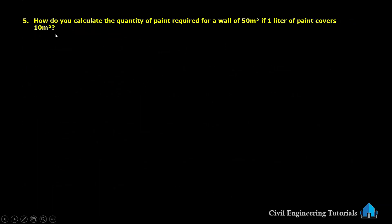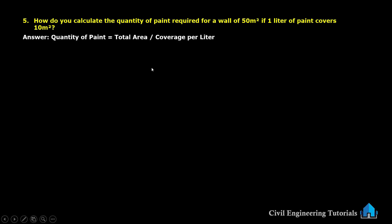Next question: how do you calculate the quantity of paint required for a wall of 50 square meters if 1 liter of paint covers 10 square meters? The formula is: quantity of paint = total area ÷ coverage per litre. So 50 ÷ 10, giving us 5 liters.